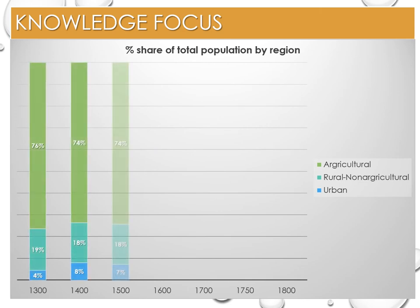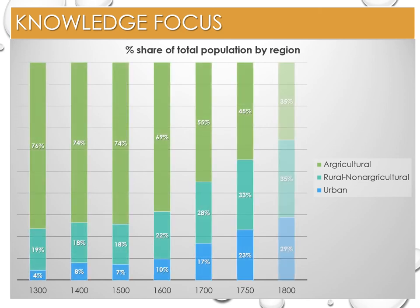This bar graph helps highlight the impact the declining agricultural numbers had. At the start of the 14th century, three quarters of the population were agricultural workers. Seven centuries later, that was only one third. In the 17th century, there was almost a 15% drop in agricultural workers. The question is, where did the workers go? They could not all be the nation's poor.